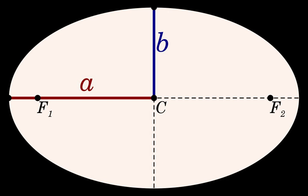Conversely, for a given total mass and semi-major axis, the total specific orbital energy is always the same. This statement will always be true under any given conditions.